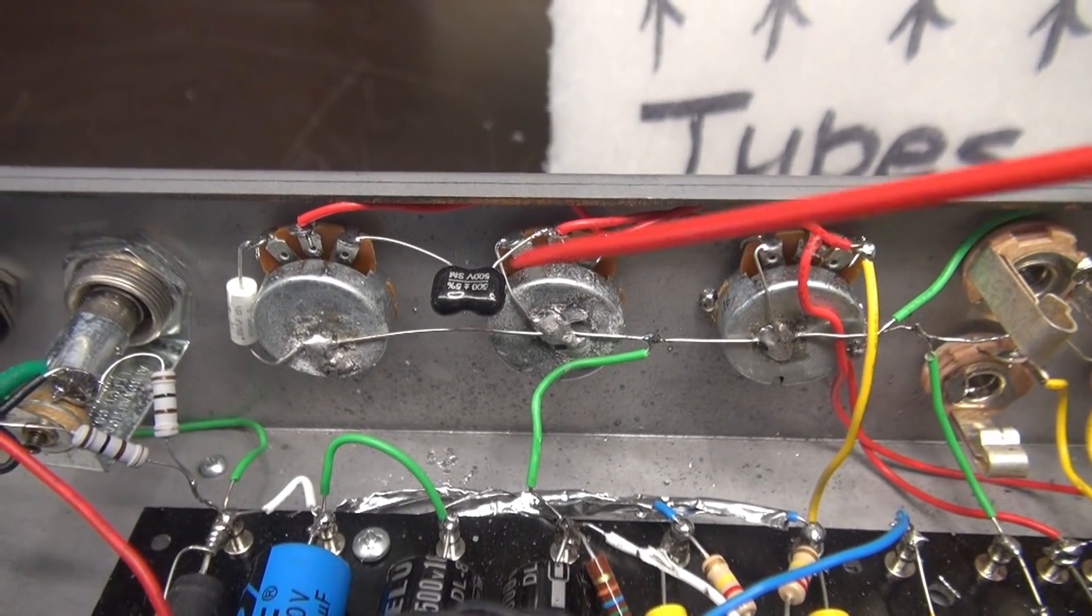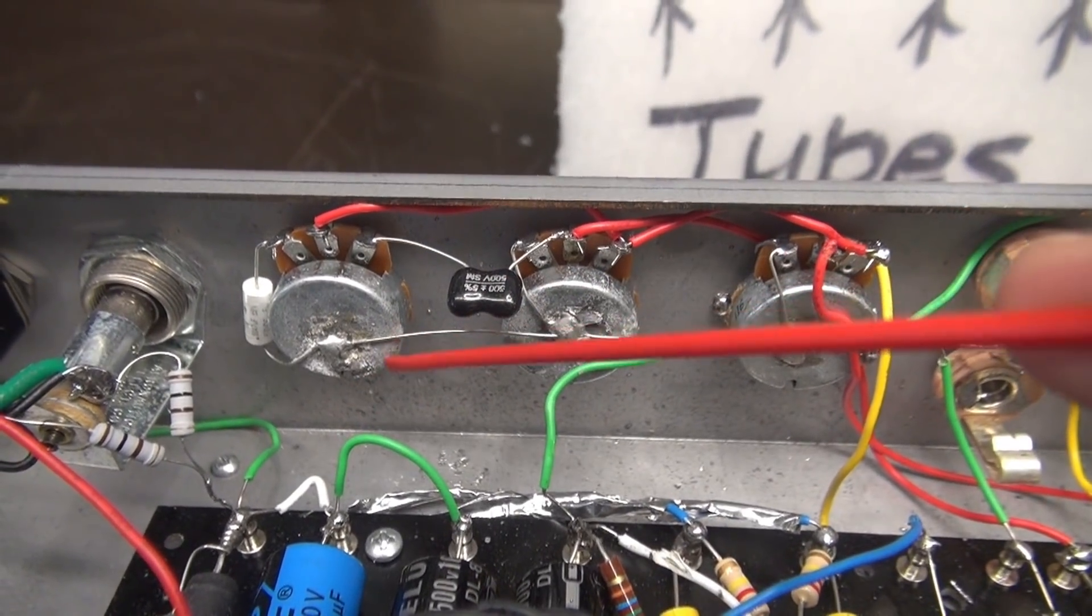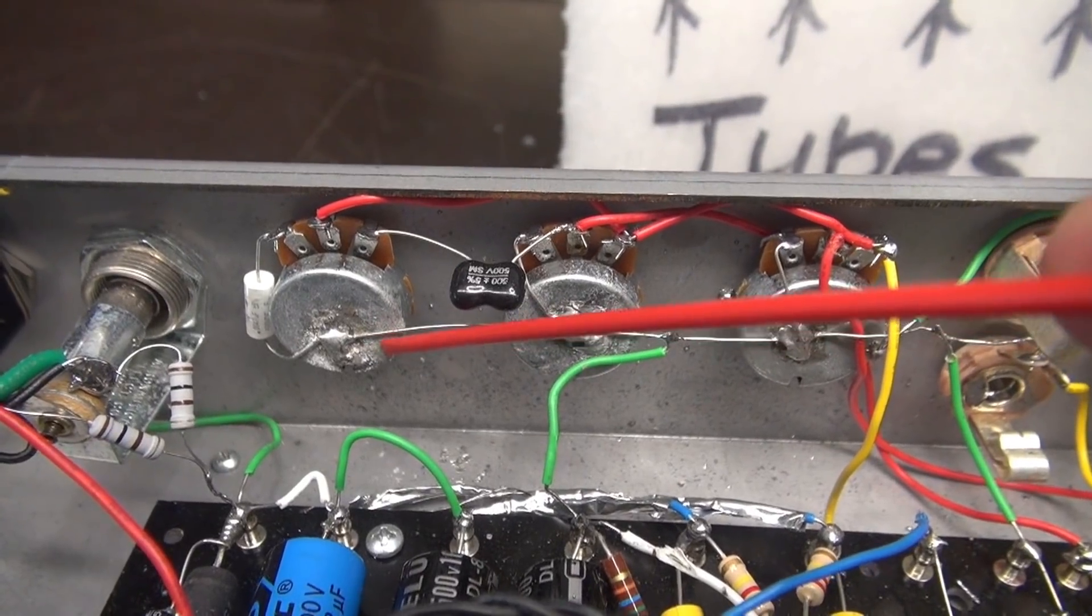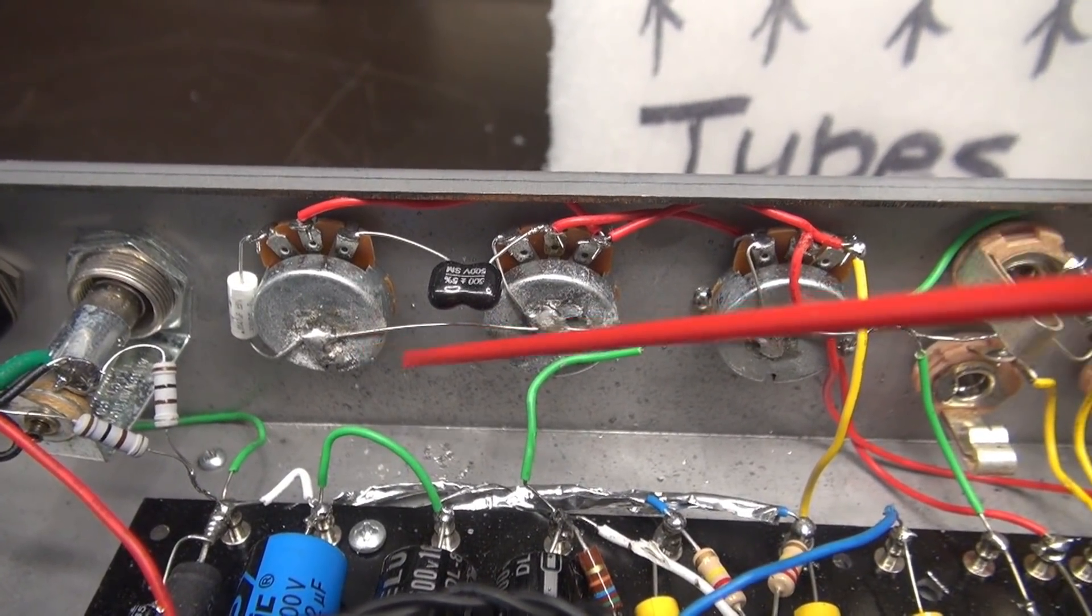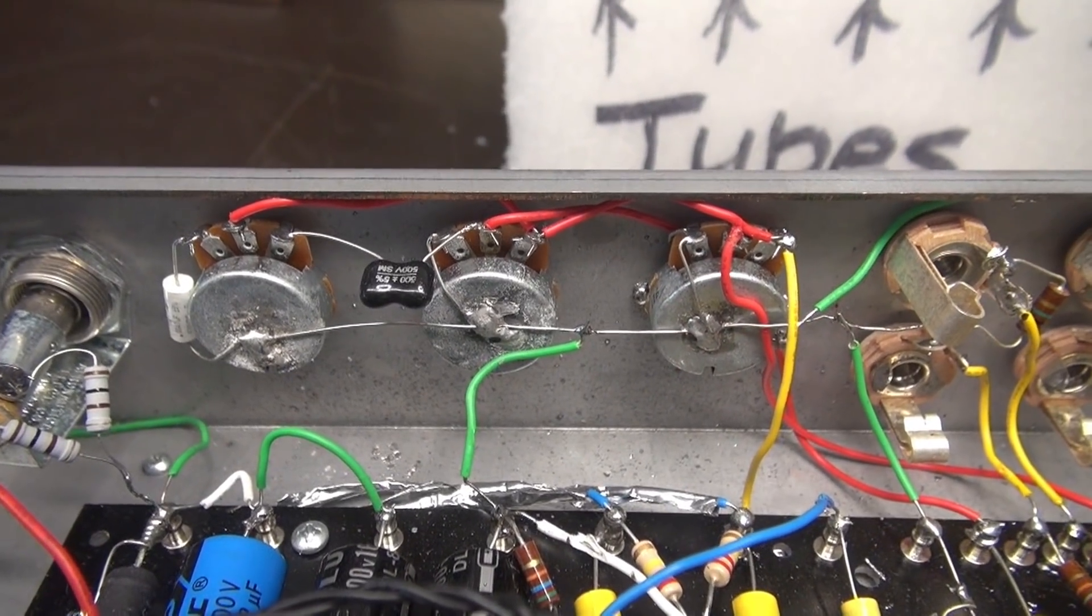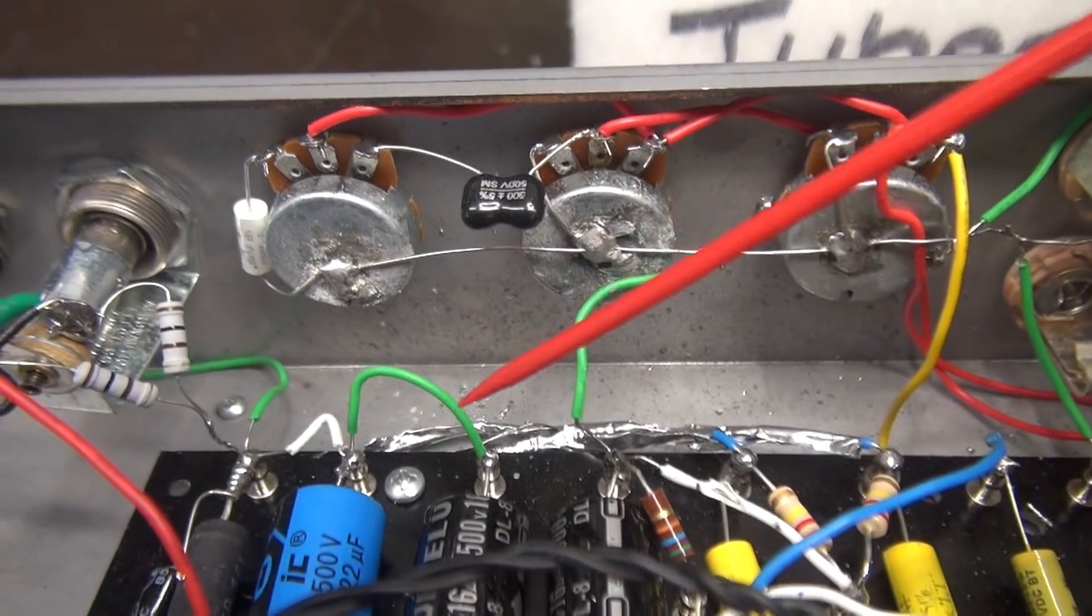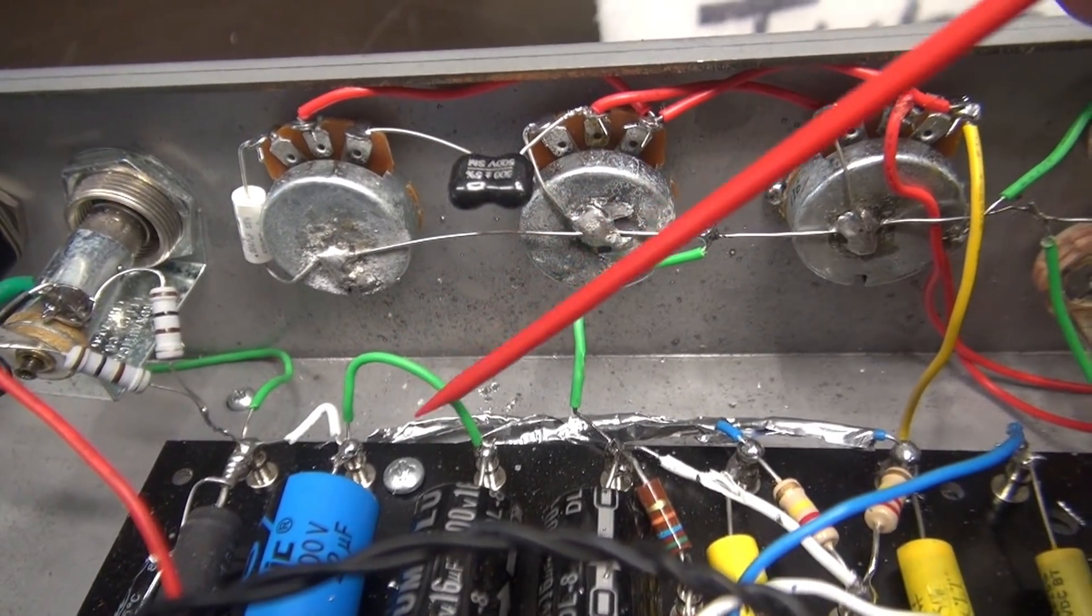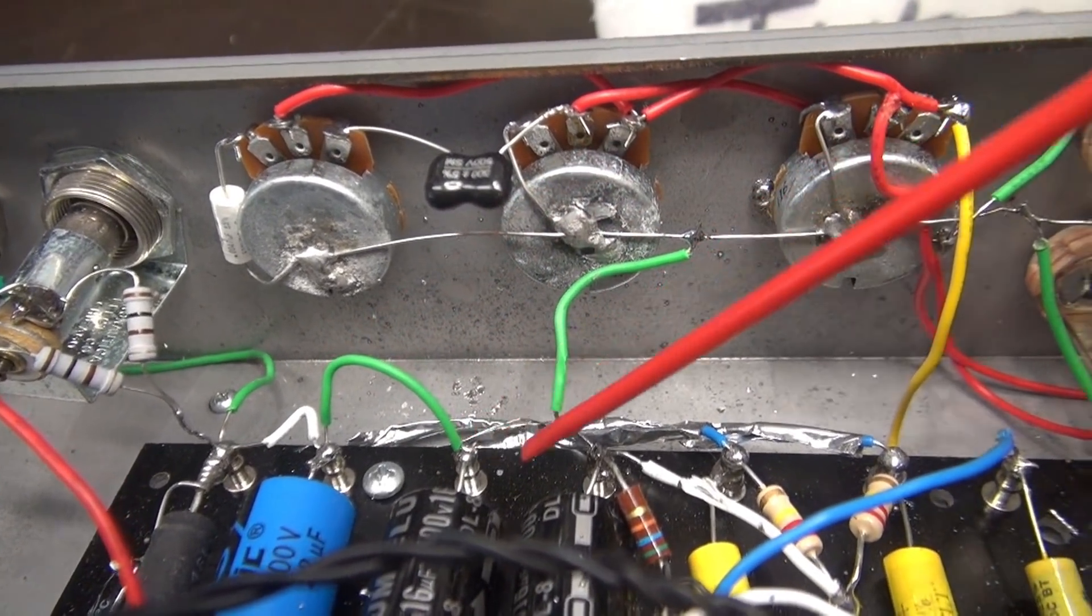Here are our volume pots and tone pot. I've noticed that there is a little bit of corrosion starting on these. I don't know if this guy lives near the coast or perhaps these pots got some moisture on them in the past.